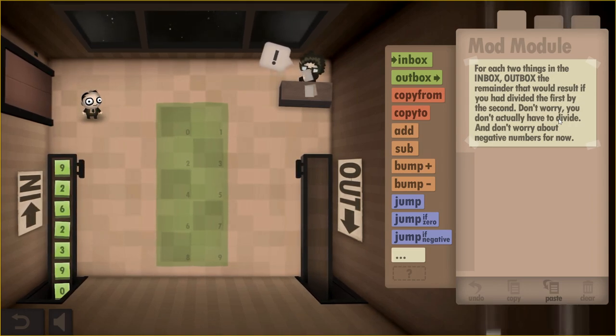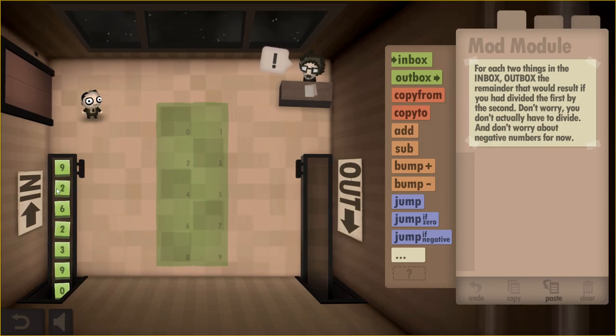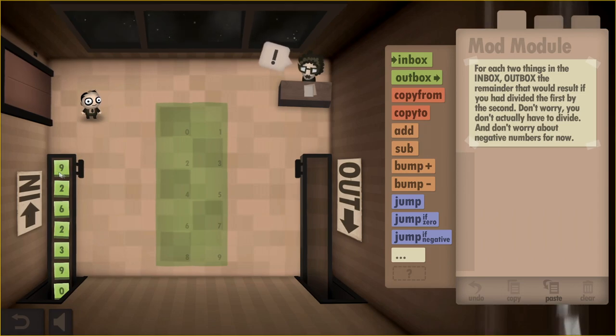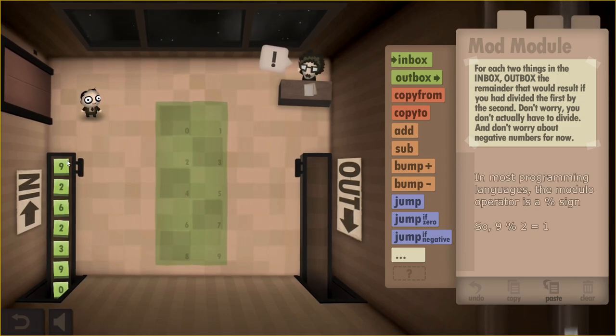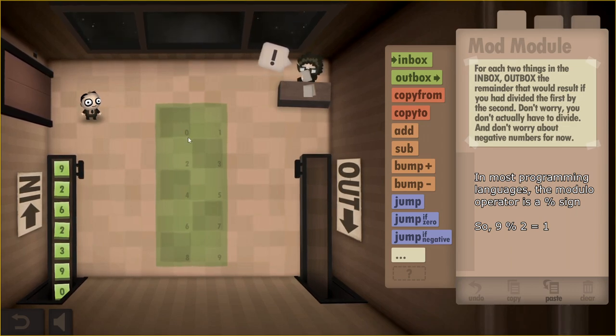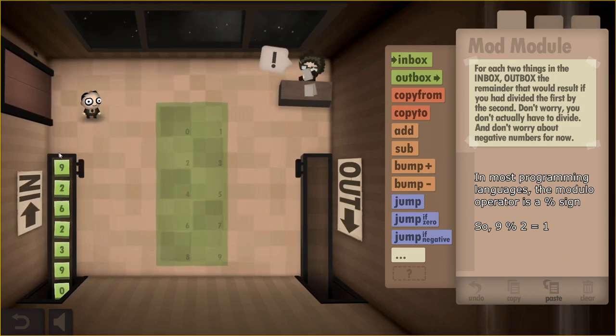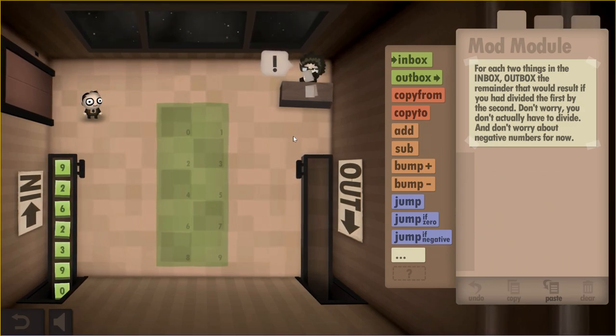We don't have to worry about negative numbers, that's a nice thing, because modulo gets interesting with negative numbers. But it looks like we have to compute the remainder of the operation of dividing the second number into the first. So in the case of these two numbers, we have 9 and 2.